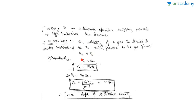Henry's law states that XA is directly proportional to P⁰A. Mathematically, P⁰A = KH · XA, and since YA = P⁰A / PT, this becomes Y = (KH / PT) · XA. We define small m = KH / PT as the slope of the equilibrium curve, so Y = m · XA, where KH is Henry's constant.